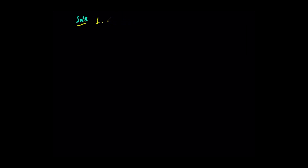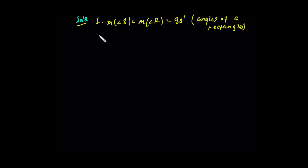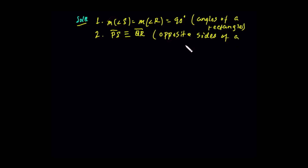Let's go to the next page. Solution. The measure of angle S is equal to the measure of angle R, which equals 90 degrees. This is because the interior angles of rectangle PQRS are right angles. PS is congruent to QR — opposite sides of a rectangle.